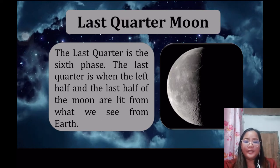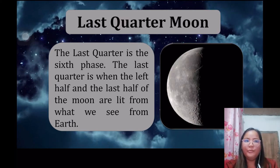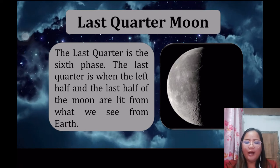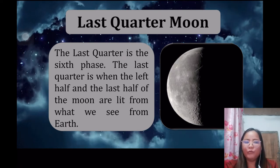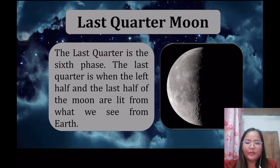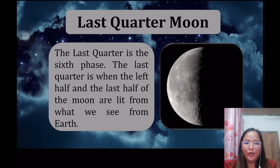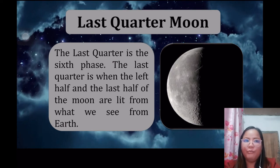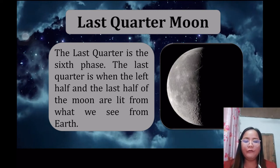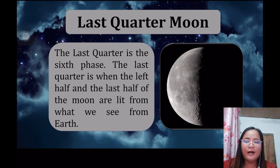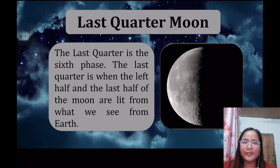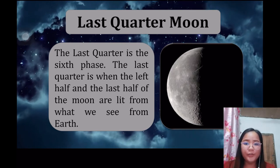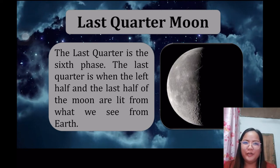The next phase is the last quarter moon, which is the seventh phase. The last quarter is when the left half of the moon is lit up from what we see from Earth — the right side is dark and the left side is lit. Have you ever observed or seen this shape of the moon before? Gabriel, what have you observed? Wow, very good — that's a great observation.